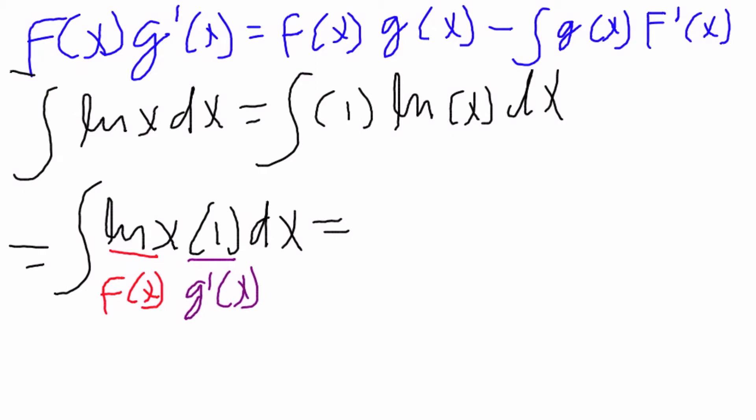The formula tells us the first term is f of x which in this case is ln of x, times g of x. g of x is the integral of g prime of x, so the integral of 1 dx is just x, minus the integral of g of x. We already found what g of x is, which is the integral of g prime of x. So it's just the integral of x times f prime of x.